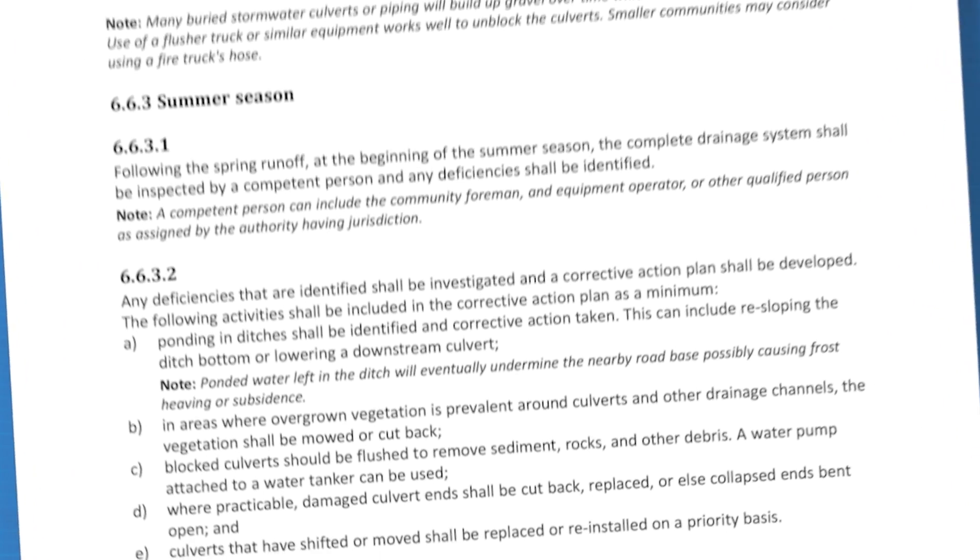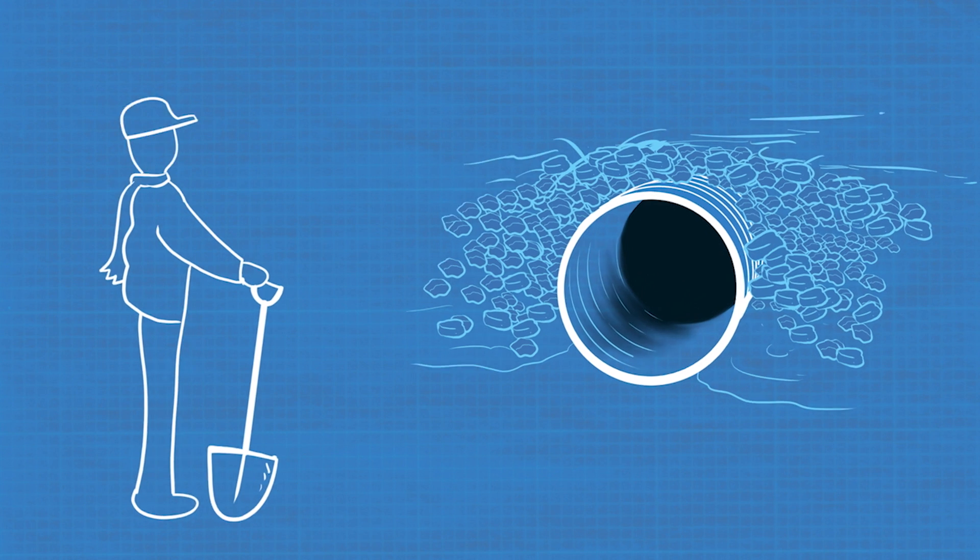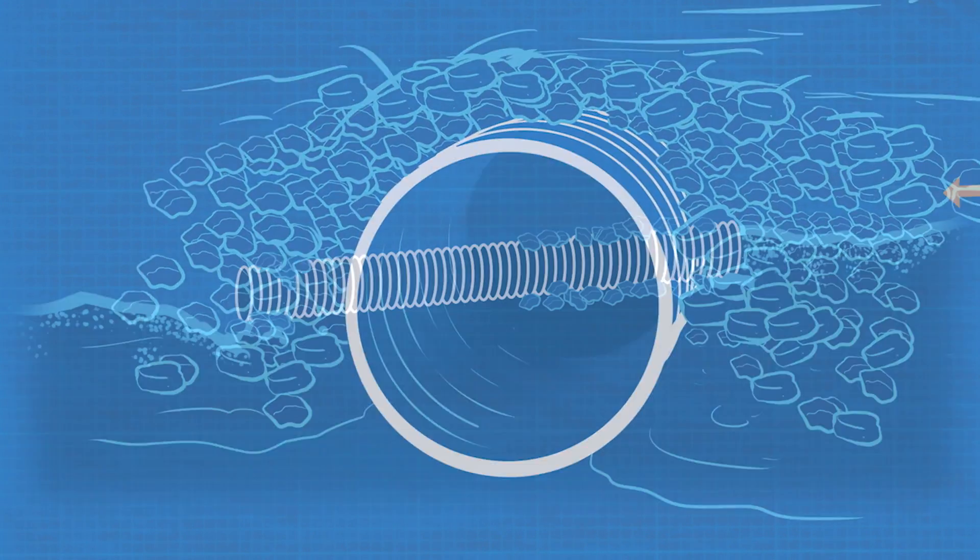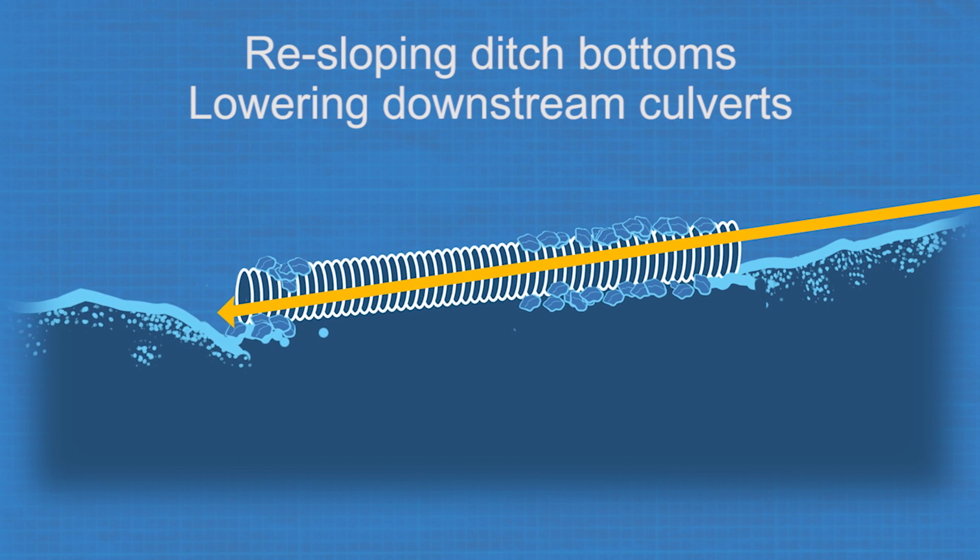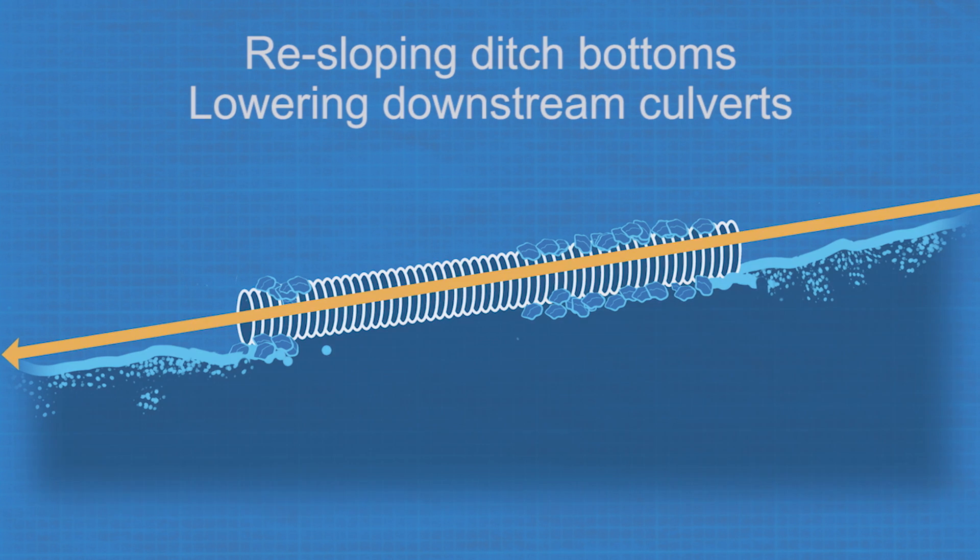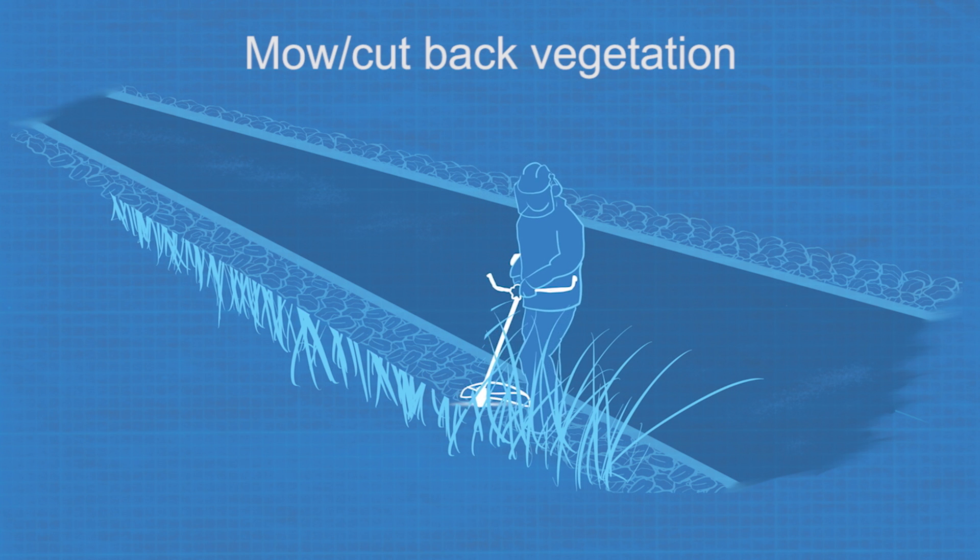After the spring runoff, at the beginning of summer, it's time to inspect the drainage system again and identify problems. Develop a plan and get to work. Activities can include re-sloping ditch bottoms or lowering downstream culverts to eliminate ponding that has begun to happen in ditches. Mowing or cutting back any vegetation that has become overgrown around culverts and other drainage ditches.